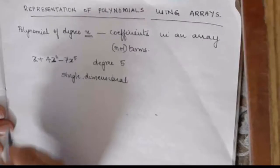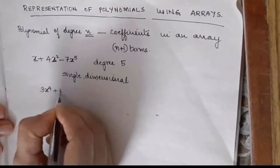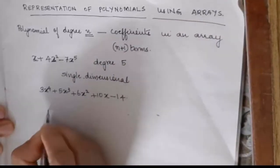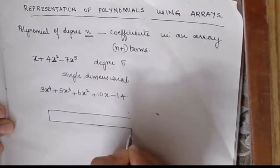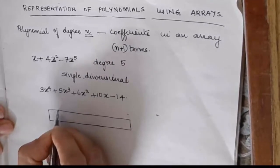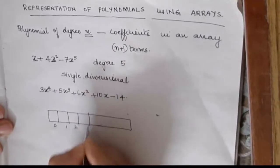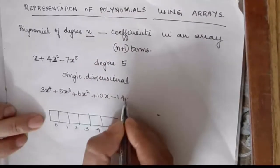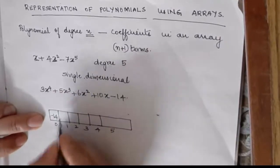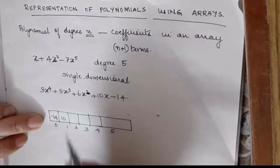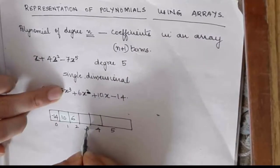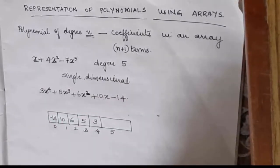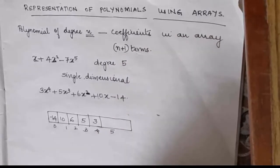Suppose we have a polynomial like this: 3x raised to 4 plus 5x raised to 3 plus 6x squared plus 10x minus 14. This can be represented in an array. We write index positions 0, 1, 2, 3, 4. Index 0 represents x raised to 0, so we store minus 14 there. Index 1 stores the coefficient of x, which is 10. Index 2 stores 6. Index 3 stores 5. Index 4 stores the coefficient of x raised to 4, which is 3. There is no x raised to 5, so we don't write anything there.